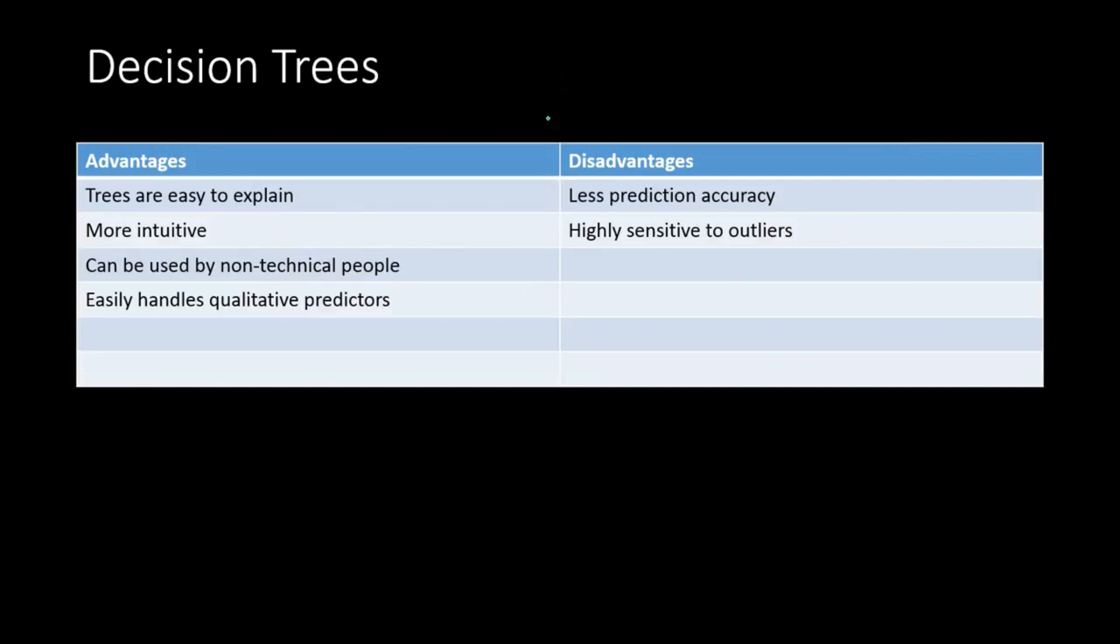Now here is a comparison of the advantages and disadvantages of using decision tree. Decision trees are easy to explain. I have already said this, and they are more intuitive in nature, which means that we as human beings think pretty much like decision tree. Whenever we make a decision, we always segment the data. We go by segmenting the entire problem into smaller parts and choosing one from this smaller part. And that's more intuitive for human beings. So that's why it is good.